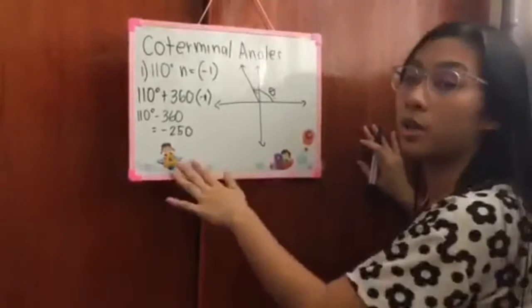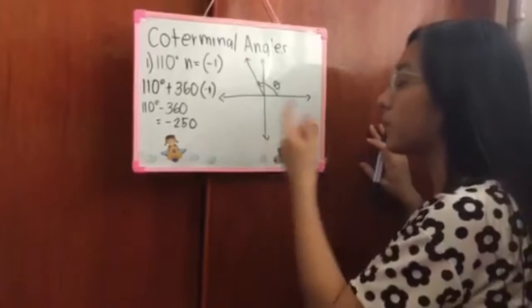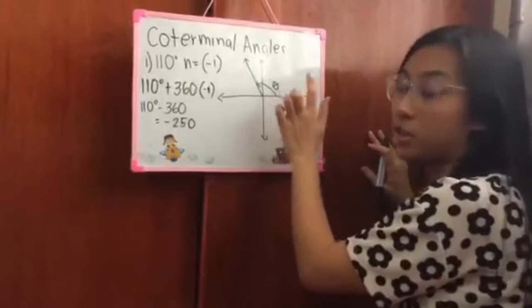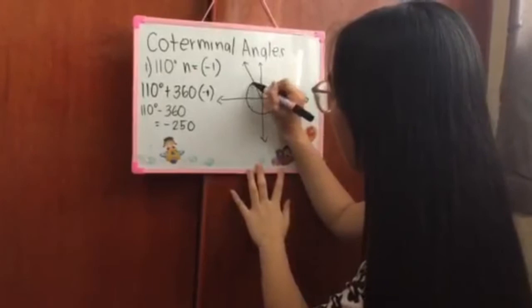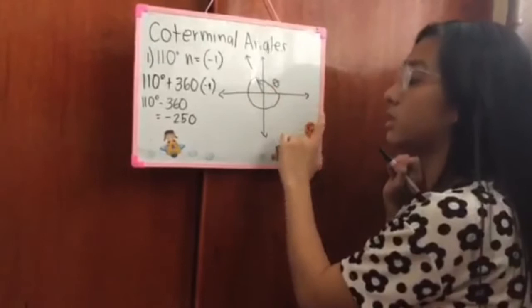Since it's negative, it comes from below, because positive is up here. It only stops here because it didn't reach 360. It's only 250, so this is the answer. It ends here.